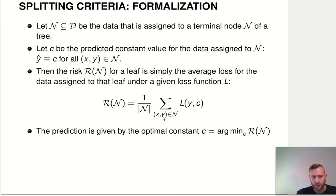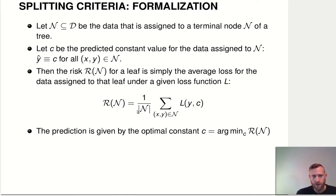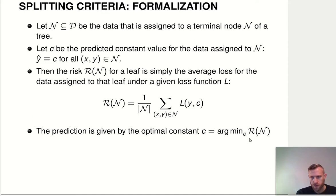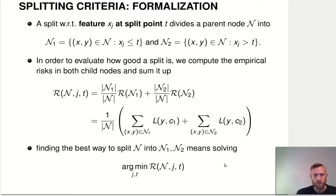We sum up over all observations in that node and compute the loss function — the difference in some fashion between the actual observed target value and the constant c that our tree predicts — then divide by the number of data points in the node to take the average. The optimal thing we can do is simply find the constant c that minimizes this empirical risk. It's a fairly simple optimization problem.